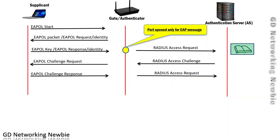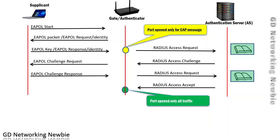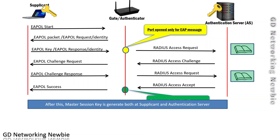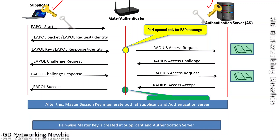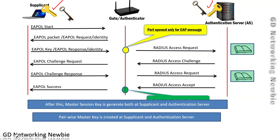The authentication server looks into its database again, and if it finds the corresponding password, it sends an acceptance message. At this stage, the authenticator opens its port for all traffic and sends a success message to the supplicant. After this message exchange, both the supplicant and authentication server have generated a Master Session Key (MSK), which is used to derive the Pairwise Master Key (PMK).